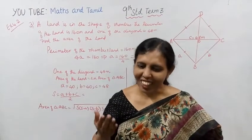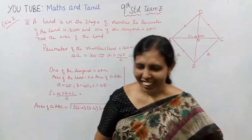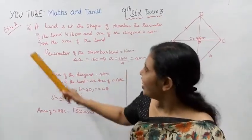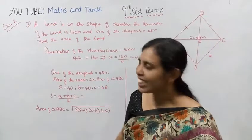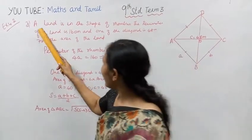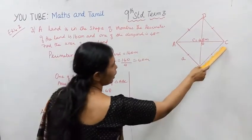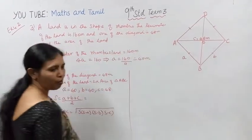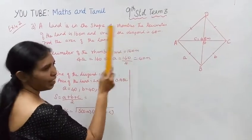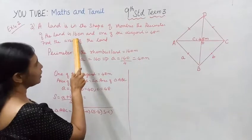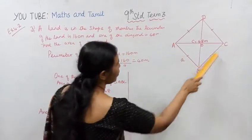Hello ninth standard students, welcome to Maths and Tamil channel. Exercise 4.2, third question. A land is in the shape of a rhombus. The perimeter of the land is in the form of a rhombus. The perimeter of the land is 160 meters.